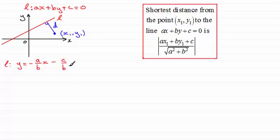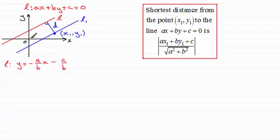Now the method we use might seem a bit strange at first, but it does make the algebra a lot easier. What I'm going to do is draw a line through this point x1, y1 which is parallel to L — something like this. And then I'm going to draw a line passing through the origin which is perpendicular to both L and L1 — in other words, parallel to the line where we've got d on. I'll label this point here as r, and this point here as s.